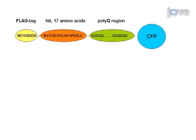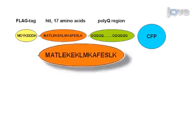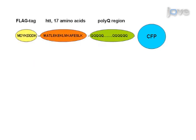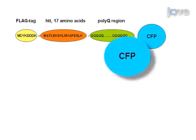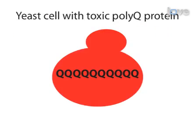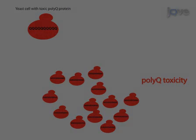A systematic analysis has established the precise amino acid sequence of a poly-q expansion protein that is required to produce toxicity in yeast. This toxic poly-q expansion protein contains an amino terminal flag tag, followed by 17 amino acids from the original sequence of the Huntington protein, a poly-q region, and a carboxy-terminal fusion to a fluorescent protein. Yeast cells expressing the otherwise toxic poly-q expansion proteins may not show any growth defect due to spontaneous...